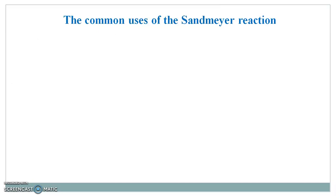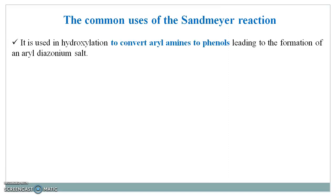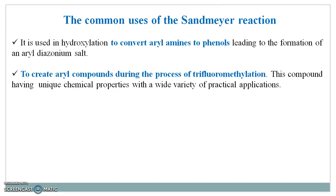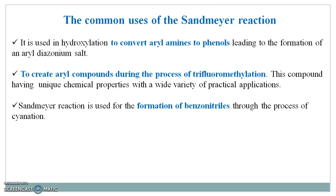Here are the common uses of the Sandmeyer reaction. It is used in hydroxylation to convert aryl amines to phenols — firstly the diazonium salt is formed, and with hydroxylation it then gives the phenol. It is used to create aryl compounds during the process of trifluoromethylation, using unique chemical properties with a wide variety of practical applications. The Sandmeyer reaction is used for the formation of benzene nitriles through the process of cyanation, and lastly it is used to create aryl halides.